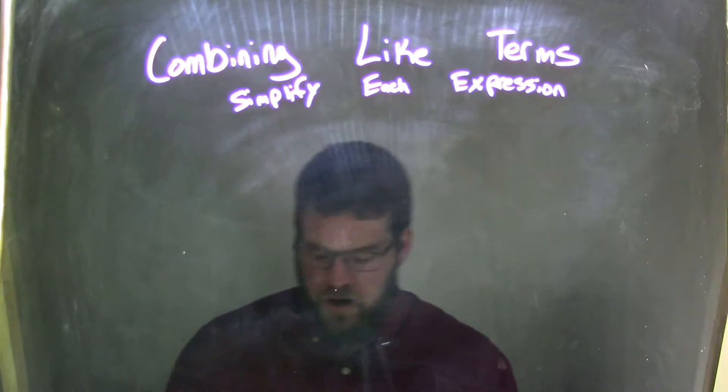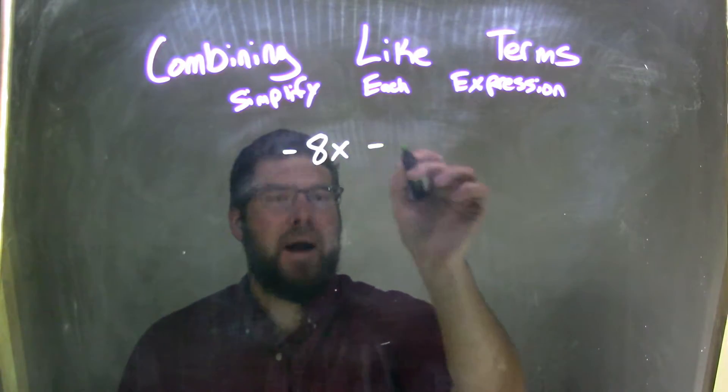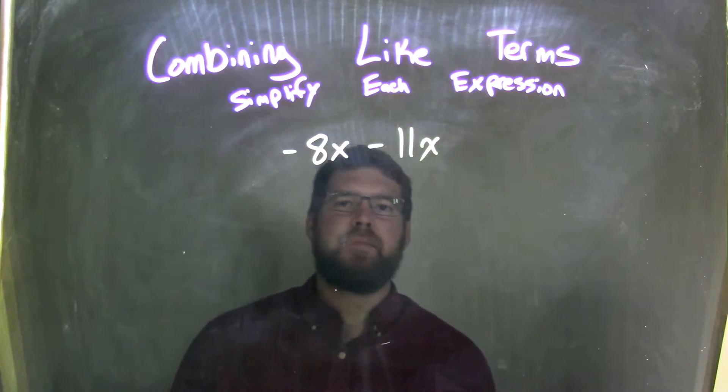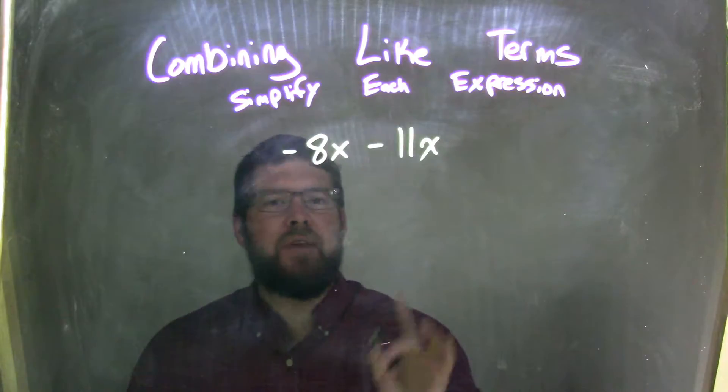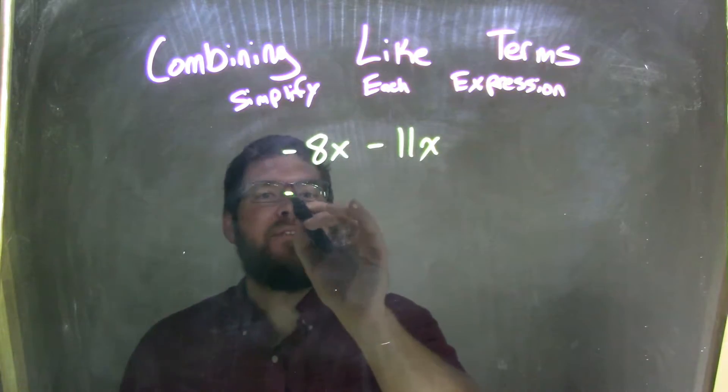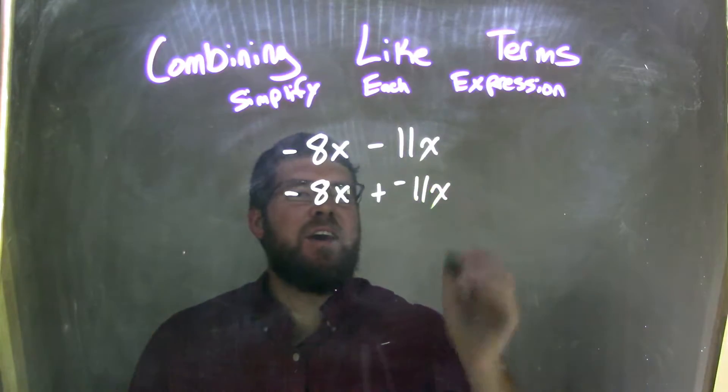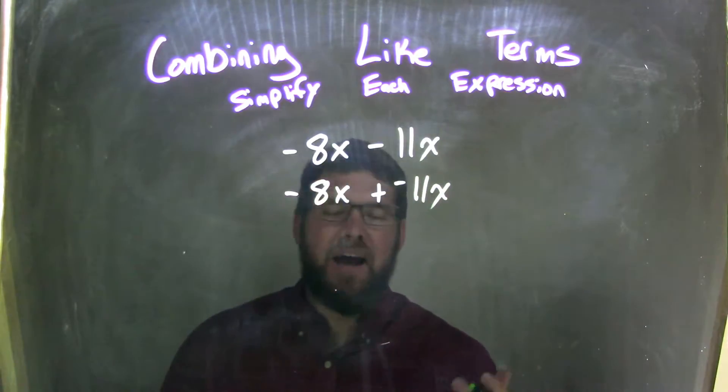So if I was given this expression, negative 8x minus 11x, well I know that subtraction is the same thing as adding a negative. So I have negative 8x plus a negative 11x, and what that allows me to do is see here that I can combine this easier. In my mind, I find it easier.